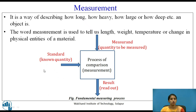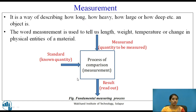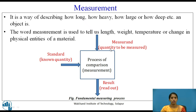In the measuring process, the known quantity — that is the standard value — and the measured value are compared. To get the result or read out, the quantity to be measured and the known quantity are compared. This is how the measurement takes place and the result is read out.